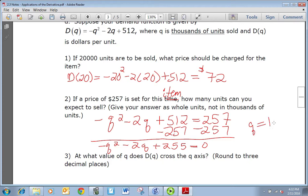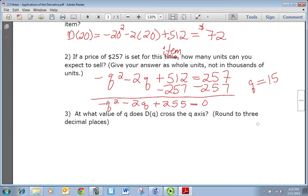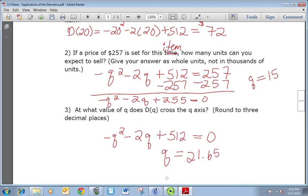At what value of q does D(q) cross the q axis? That's just asking us to take the D(q) function, set it equal to 0 and solve. Again you can use the quadratic formula and you should get that q is 21.65. Now you might get two answers and one of them is a negative, but it doesn't make sense to have negative items, so we throw out that answer.